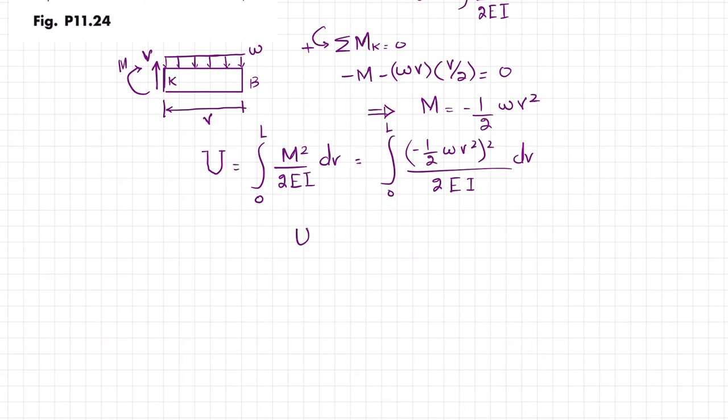U becomes equal to one over 2EI outside the integral, since these are constants. The integral is one-fourth W squared V to the fourth dV. Taking out the constants: one-fourth times one over 2 equals one over 8EI times W squared.